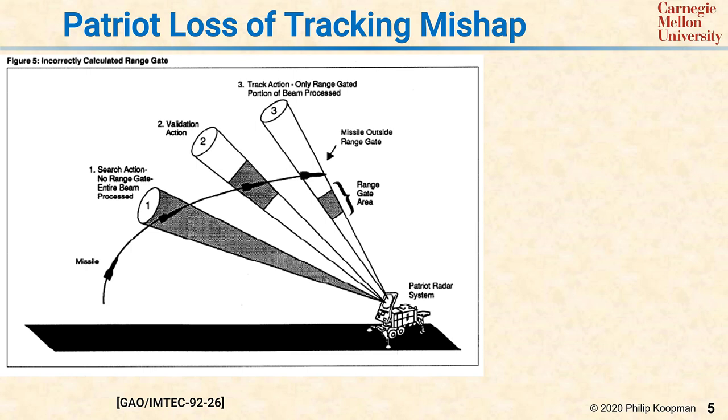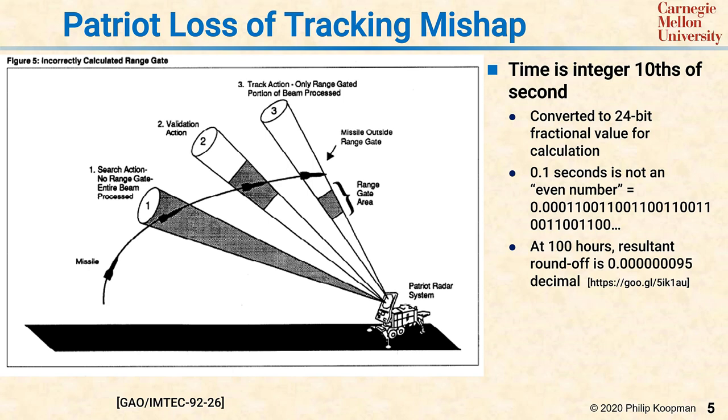In order to know where it is now, it has to know where it used to be and estimate the velocity and trajectory. So this radar runs a target tracker to figure out about where the missile is going to be so it knows which pulse to pay attention to for very precise and high-frequency updates. However, this system represented time in tenths of a second.